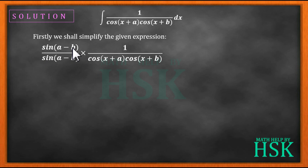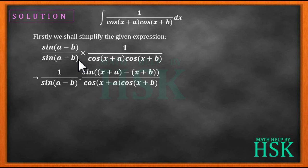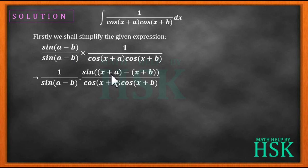Next, I'm going to adjust the terms so the function can be solved further. I've written sin(a-b) as sin[(x+a) minus (x+b)]. What I've done is added x and subtracted x to (a-b): so a-b becomes (x+a) minus (x+b). This is a very important step — if you don't get this step, you cannot solve the question. Remember, these two terms are present with the cosine functions in the denominator.